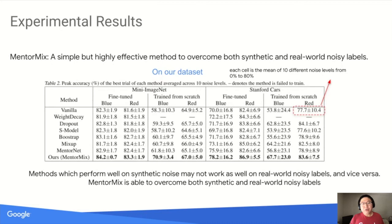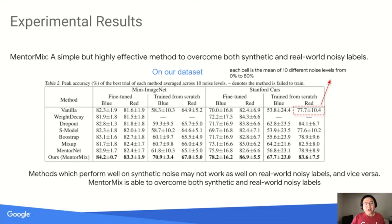On our new dataset, our method outperforms strong robust learning baselines under various settings, covering different tasks — coarse image classification on MiniImageNet and fine-grained classification on Stanford Cars — different training settings such as training from scratch or fine-tuning from a pre-trained checkpoint, and different noise levels and types, including blue and red noise. Each cell in the table computes the mean of 10 different noise levels from 0% to 80%. From the table we can see two things: first, methods that perform well on synthetic noise may not work as well on real-world noise, and vice versa; second, MinterMix is able to overcome both synthetic and real-world noise levels.